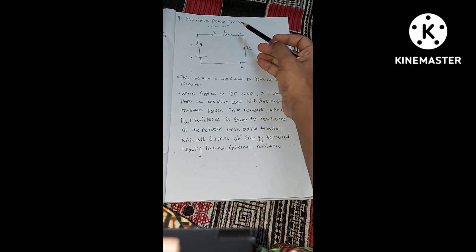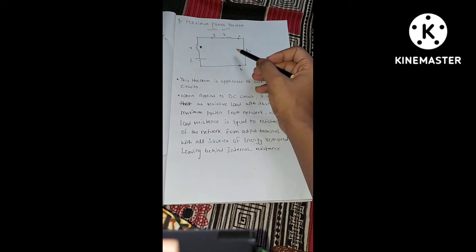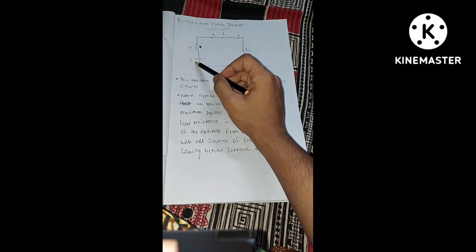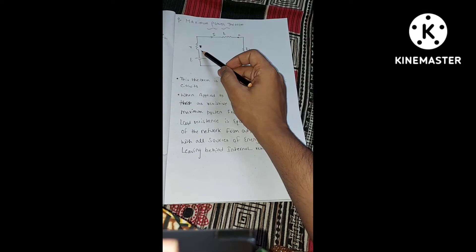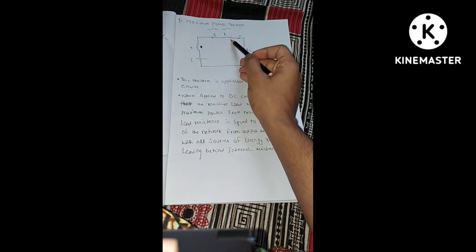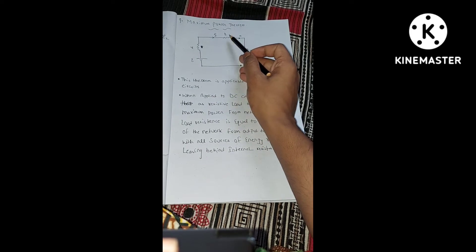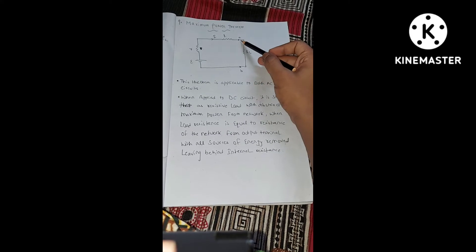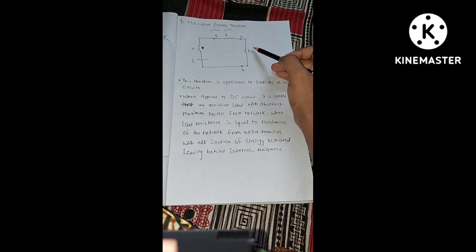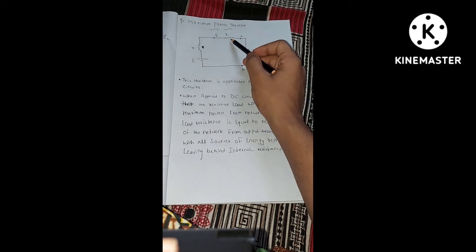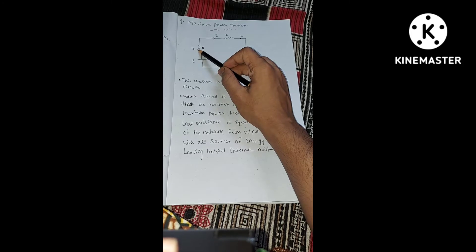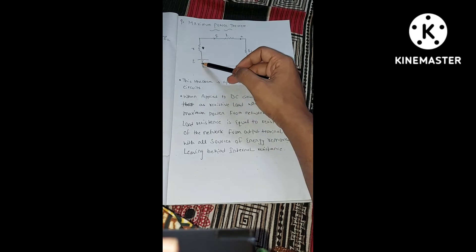First of all you have to draw the circuit diagram. The circuit diagram is very simple: there is one voltage source, one resistance R, one big resistance capital R, and your load resistance RL. The two terminals AB are across which the load resistance RL is placed. The current flowing is I, small resistance R is the internal resistance.